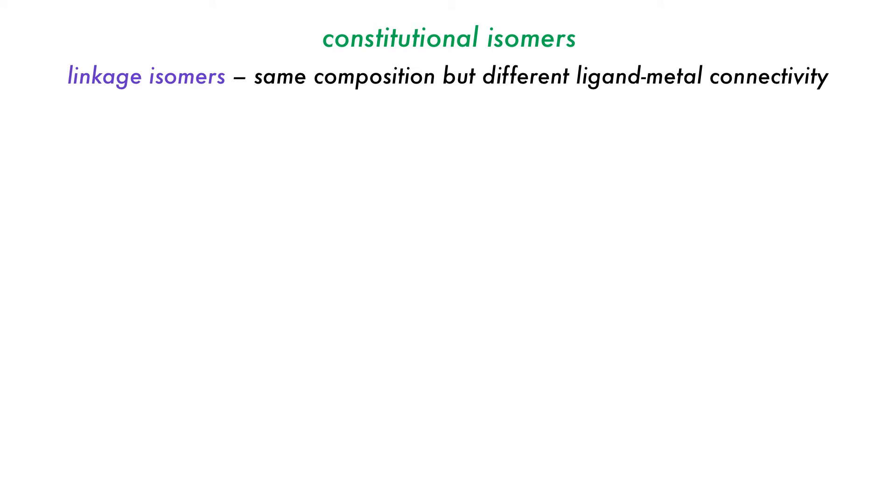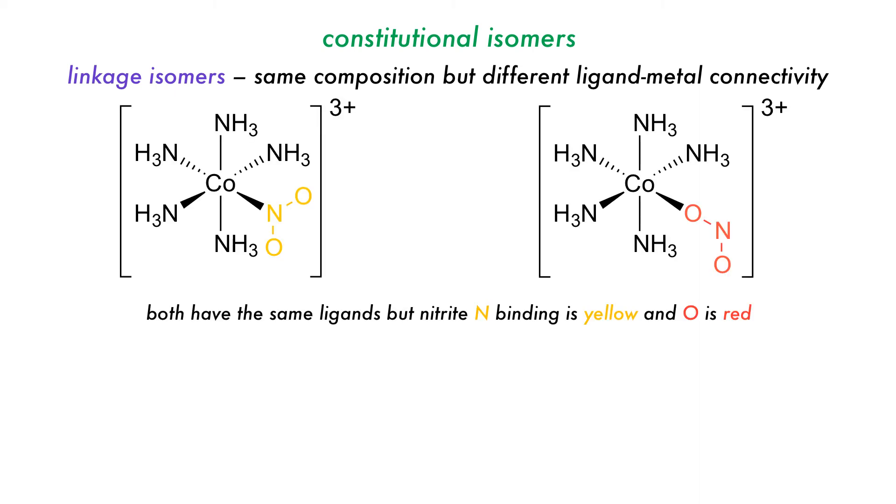Linkage isomers occur when there are differences in the way ambidentate ligands bind to the central atom. In the case seen here, both have nitrite ligands, but the compound on the left has N binding to the central atom and is yellow, whereas the compound on the right has O binding and is red.